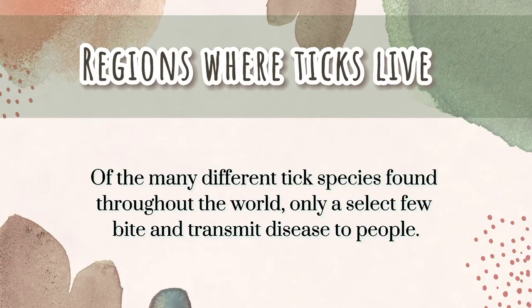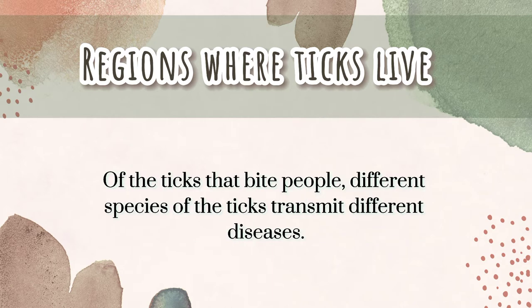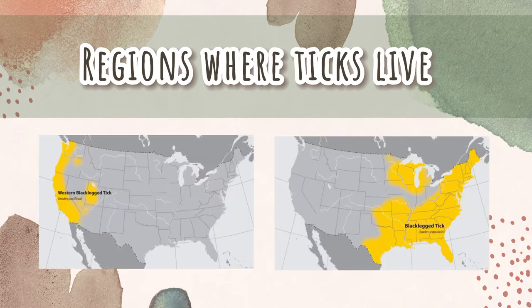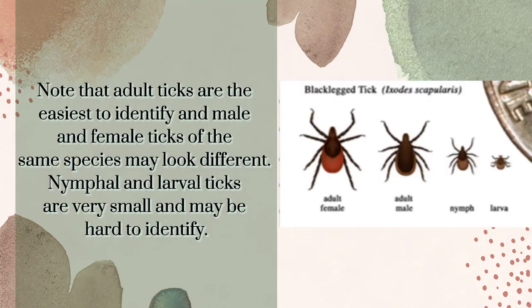Of the many different tick species found throughout the world, only a select few bite and transmit disease to people. Of the ticks that bite people, different species transmit different diseases. This map shows the general distribution of human-biting ticks in the contiguous United States. Populations of ticks may be found outside shaded areas; naturally occurring populations do not occur in Alaska. However, the brown dog tick occurs in Hawaii. Note that adult ticks are the easiest to identify, and male and female ticks of the same species may look different. Nymphal and larval ticks are very small and may be hard to identify.